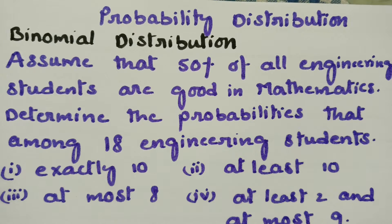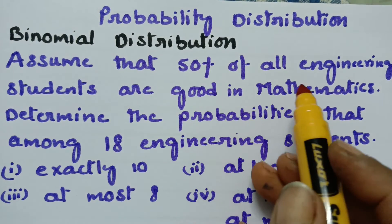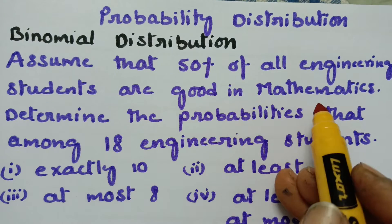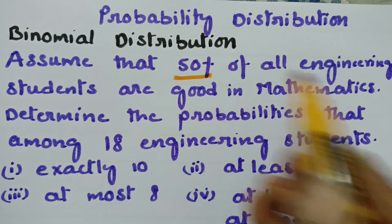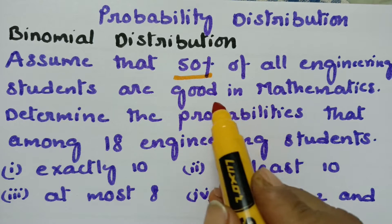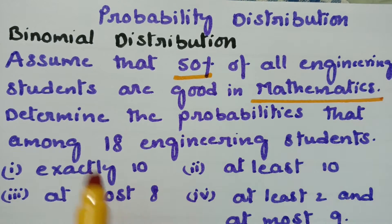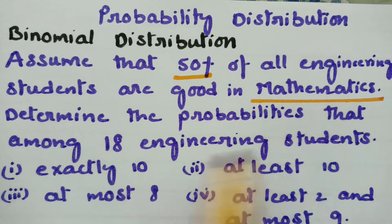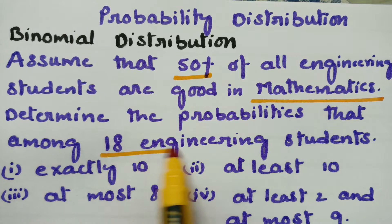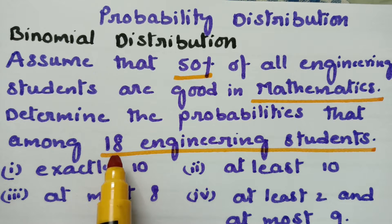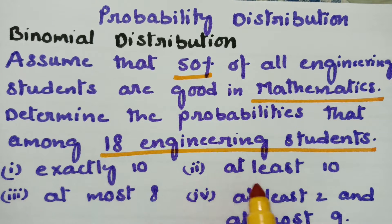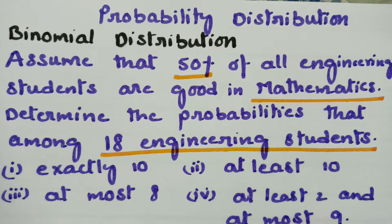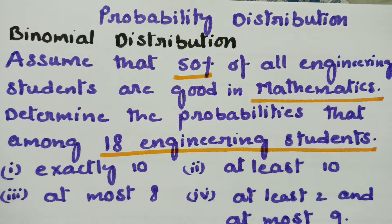This video is on binomial distribution. The problem is: assume that 50% of all the engineering students are good in mathematics. Determine the probability that among 18 engineering students — exactly 10, at least 10, at most 8, and at least 2 and at most 9 — are good in mathematics.